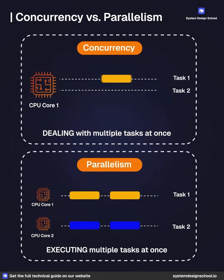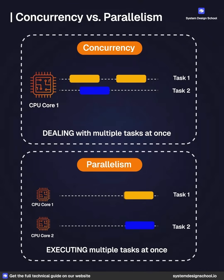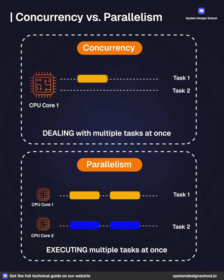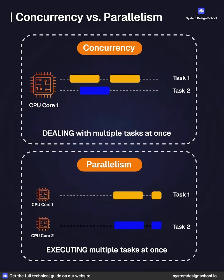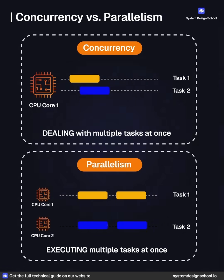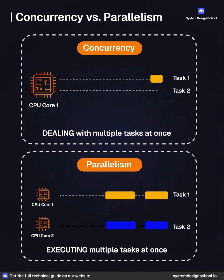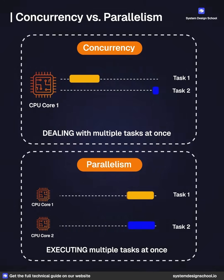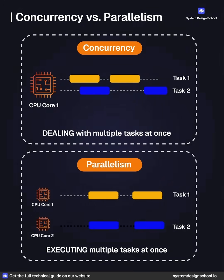How it works: tasks run in true parallel on separate cores. Use case: ideal for CPU-bound tasks that require heavy computation, improving throughput and speed. Example: matrix operations split across cores.